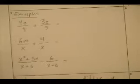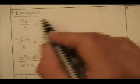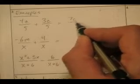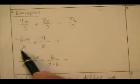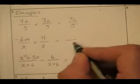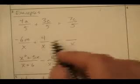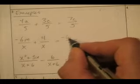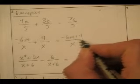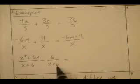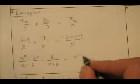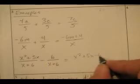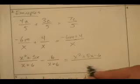Here are some examples. 4c over 5 plus 3c over 5 — check out the booty, they're the same. 4c plus 3c is 7c over 5. Look at the booties here — same, x and x. It's going to be over x. Negative 6m plus 4, or 4 minus 6m. These both are over x plus 6 — that's nice. I'm going to just subtract. So I end up with x squared plus 5x minus 6 over x plus 6.